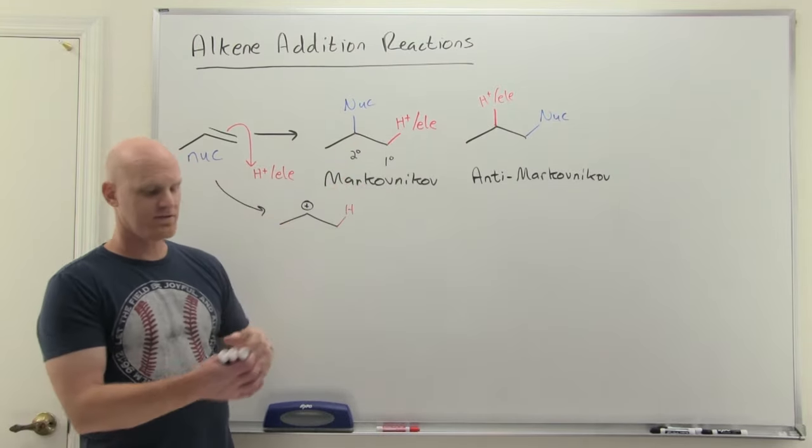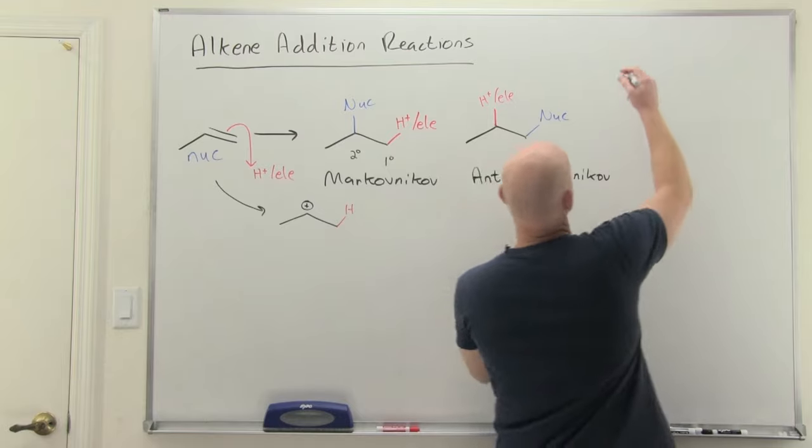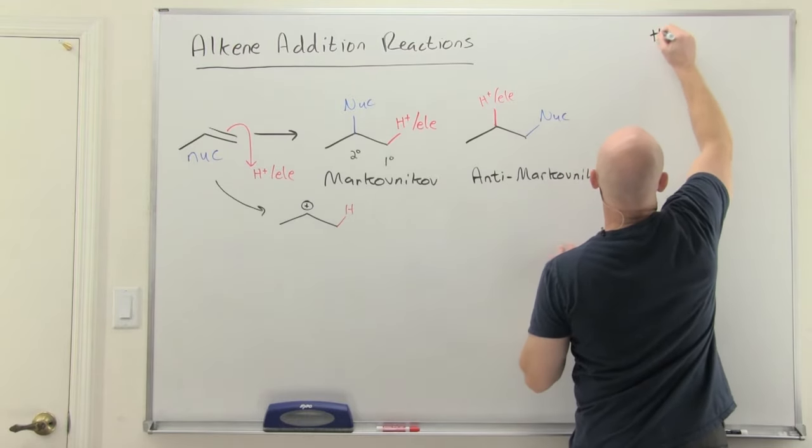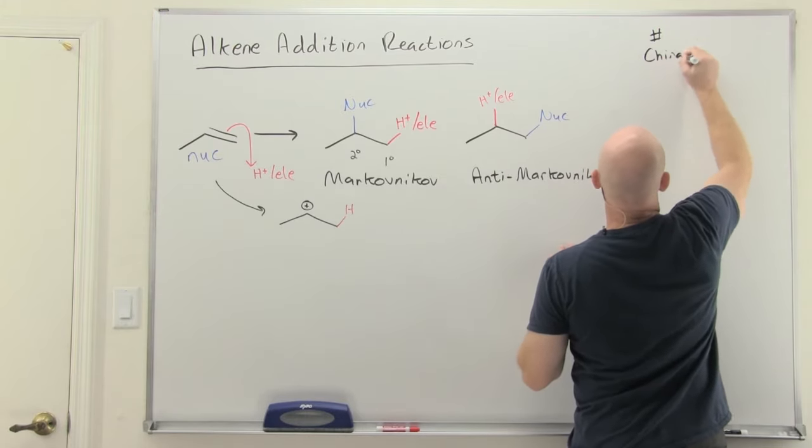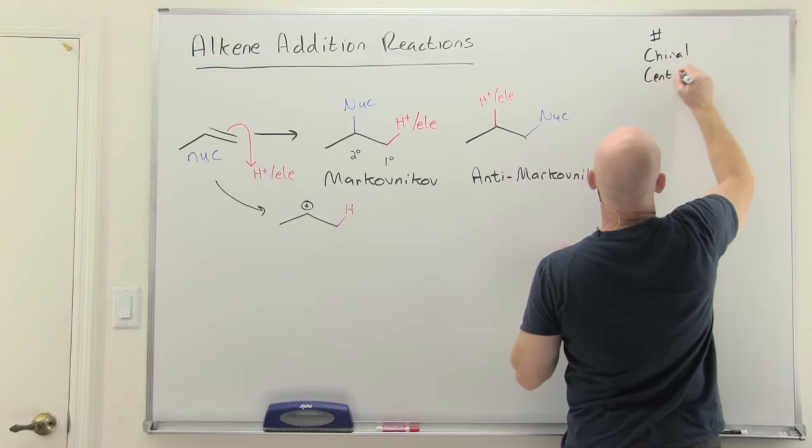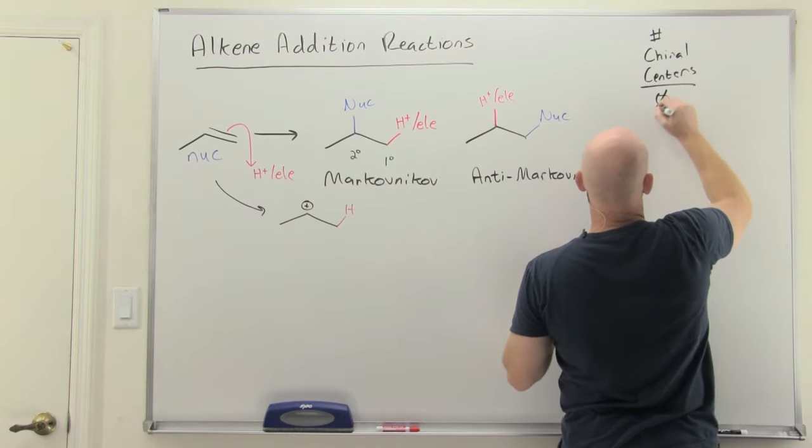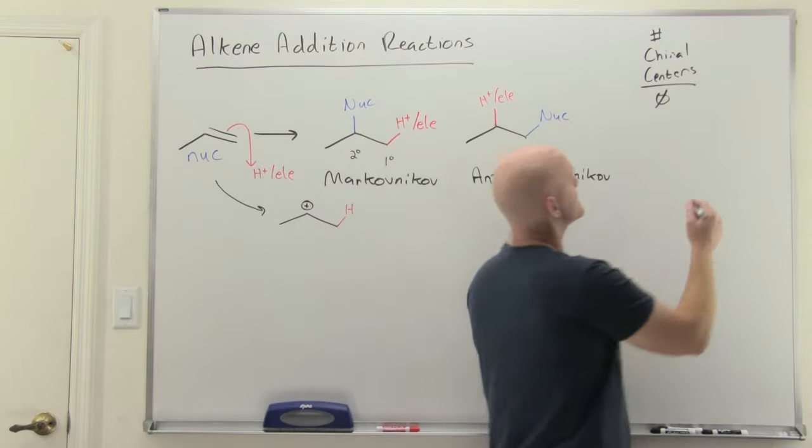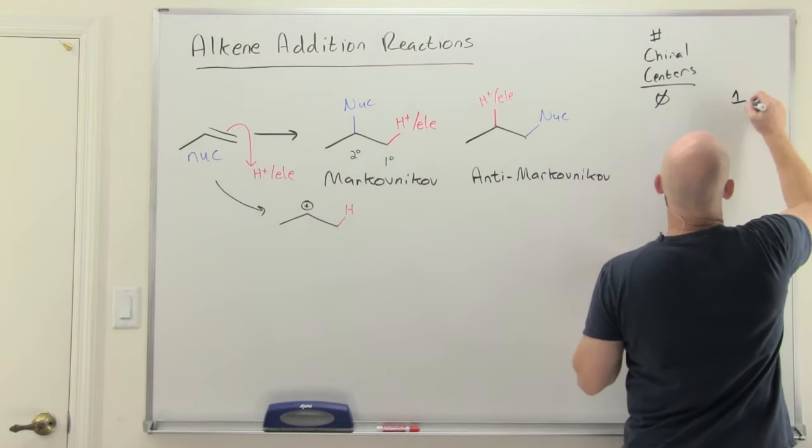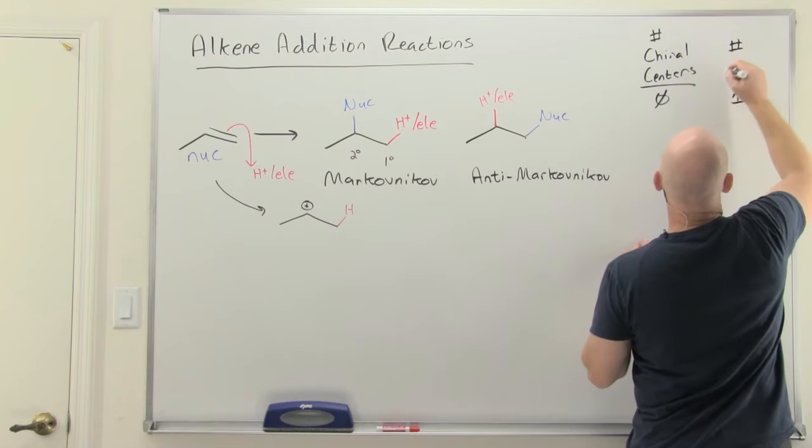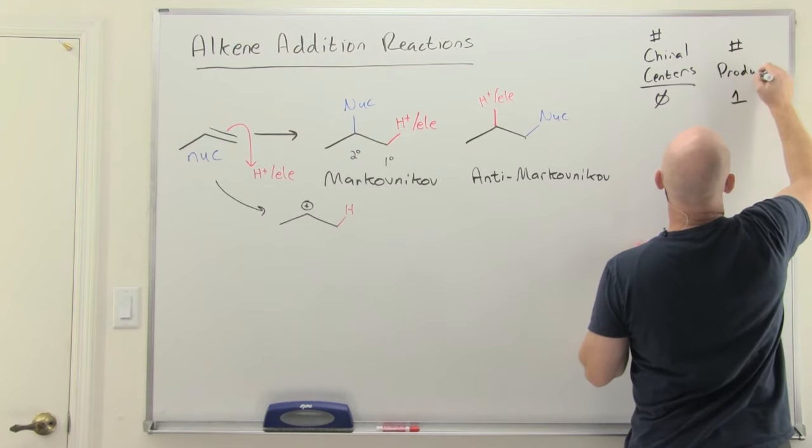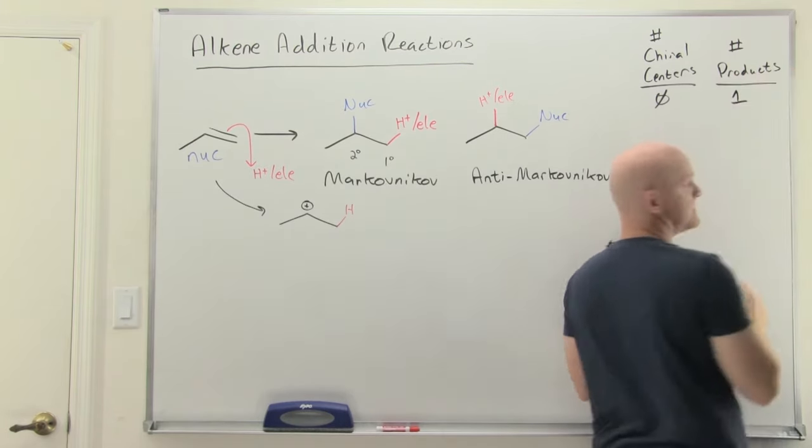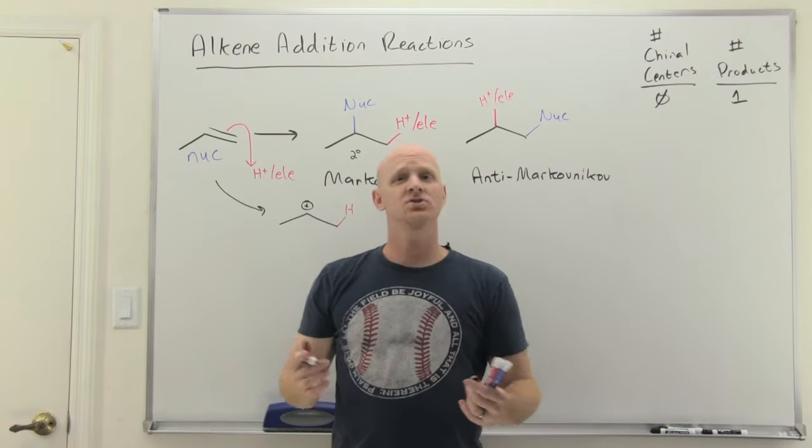Now, if neither one of these turns into a chiral center, we can kind of classify this here. So let's say number of chiral centers. If you don't form any, if those out of the two options you had, neither one turns into a chiral center, then you're just going to form a single achiral product. And so I'll label this as the number of products. And you just get one achiral product and life is good, life is easy.